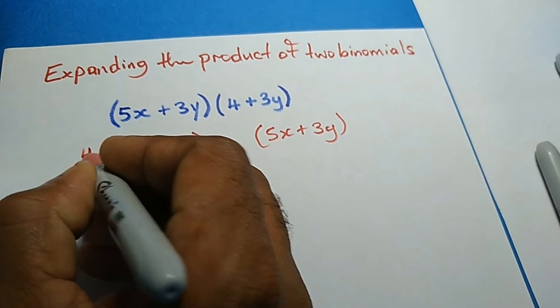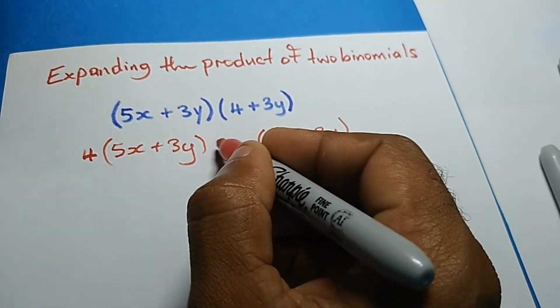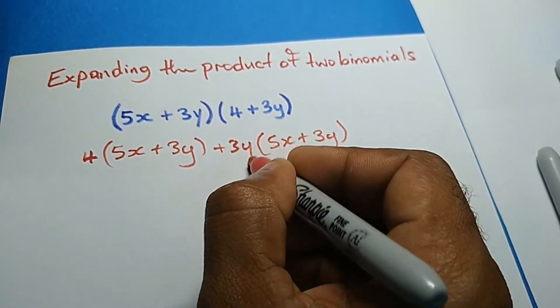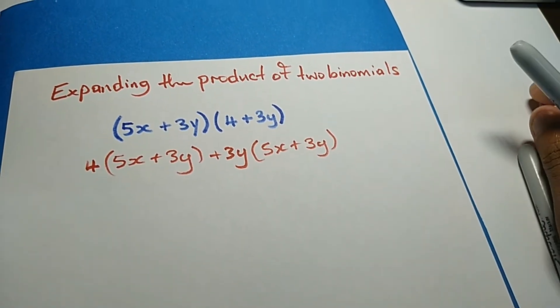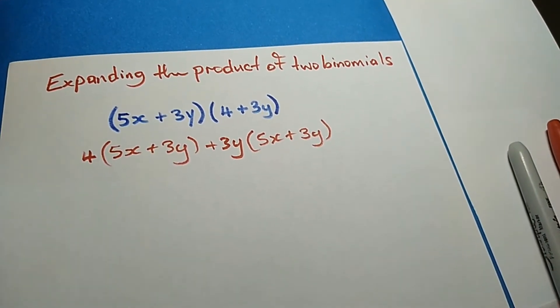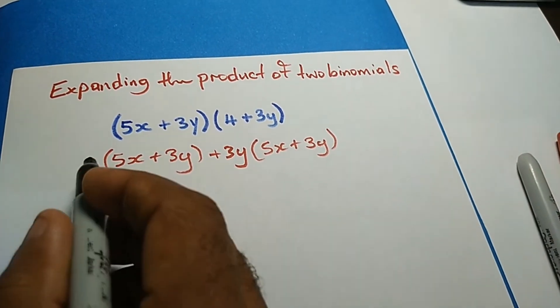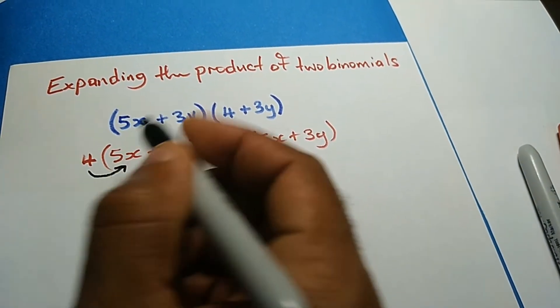I'll take the 4 to multiply the first bracket and the positive 3y to expand the other bracket. So I'll have 4 times 5x, which gives me 20x.